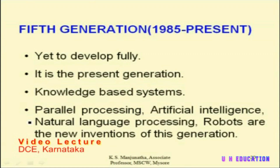The fifth generation is the present generation but is not yet fully developed, and it is based on the knowledge base. Computers developed through the fourth generation are just servants of human beings — they execute instructions telling the computer what to do, how to do, and when to do. But the fifth generation computer has the capability to think on its own with the help of knowledge induced by the user into the computer memory. New concepts developed during this period include parallel processing, artificial intelligence — where the computer is made to behave almost like a human being — natural language processing, and the development of robots.